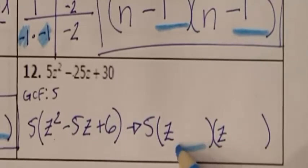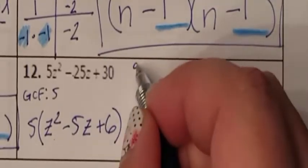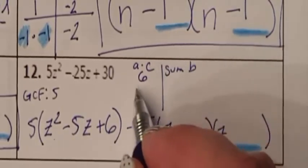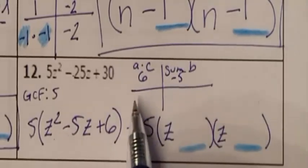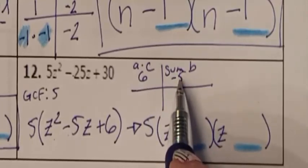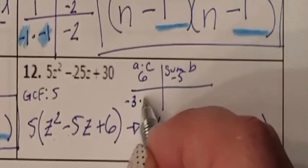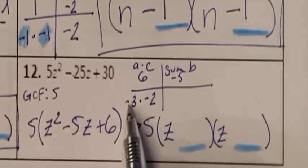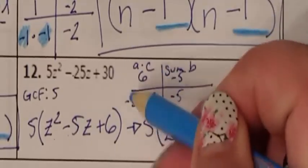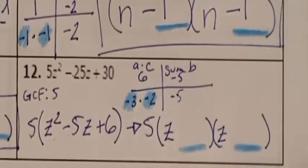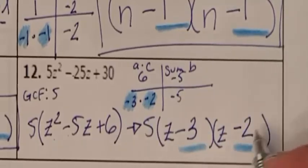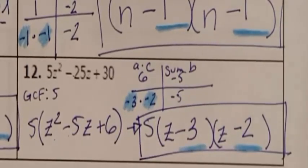So now I just need to find out what these two numbers are. A times C — somebody better add up to B. A times C is 6, and B is negative 5. What two numbers multiply to give me 6, but when I add them, I get negative 5? Negative 3 and negative 2 multiply together to give me positive 6, and when I add them I get negative 5. So here's minus 3 for negative 3, and minus 2 for negative 2. And here is number 12 fully factored.